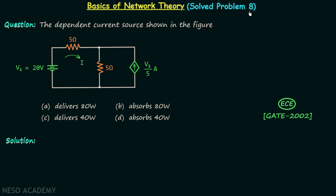We are going to solve our eighth problem. The dependent current source shown in the figure — option A says it delivers 80 watts, option B says absorbs 80 watts, option C says delivers 40 watts, and option D says absorbs 40 watts. We need to find how much power this dependent current source is absorbing or delivering. It is dependent on voltage V1, which equals 20 volts as given.